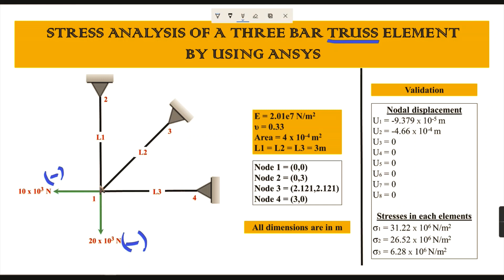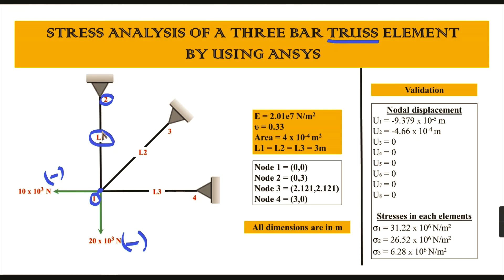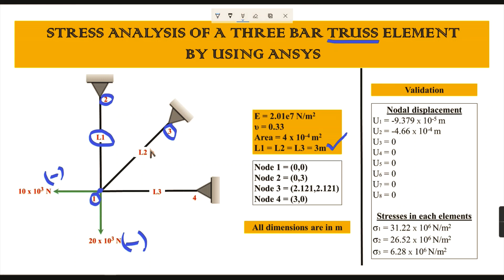Now we need to give some node numbers. Starting from here, this point is taken as the first node and this one is the second node. The distance between node number one and two is given as L1, and the L1 value is three meters. The second bar connects node one and three, and the distance L2 is also three meters.